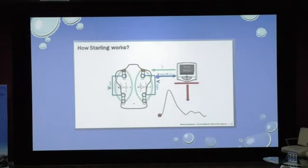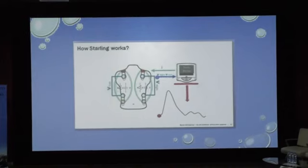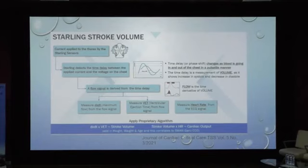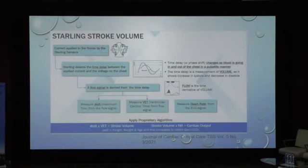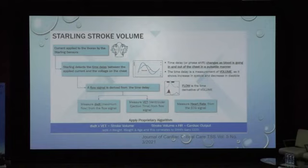The Starling Bio machine from Baxter works on this principle. Two pairs of electrodes — inner and outer — are pasted over the chest, creating a current shield. The machine detects the time delay between the applied current and the voltage in the chest. This time delay or phase shift changes as blood flows in and out in a pulsatile manner and is measured as a unit of volume. A flow signal is derived from this time delay, giving maximum flow, ventricular ejection time, and heart rate from the ECG. The formula applied is dx/dt × VET = stroke volume, and stroke volume × heart rate = cardiac output.